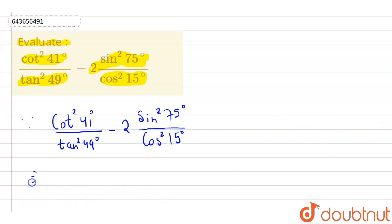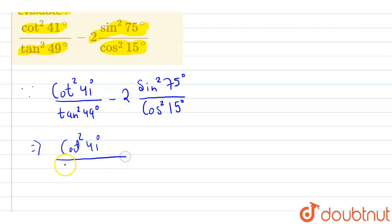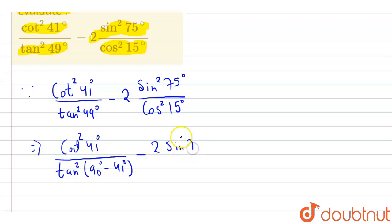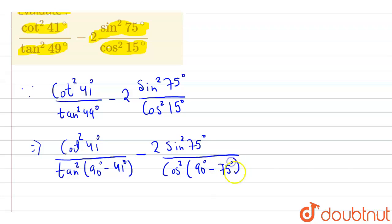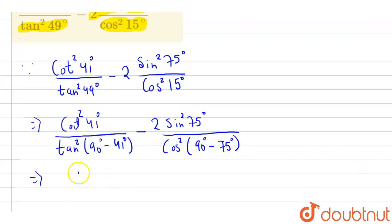Now we can modify this expression. Cot squared 41 degrees remains as it is. Tan squared 49 degrees can be written as tan squared (90 degrees minus 41 degrees), since 90 minus 41 equals 49 degrees. And cos squared 15 degrees can be written as cos squared (90 degrees minus 75 degrees).